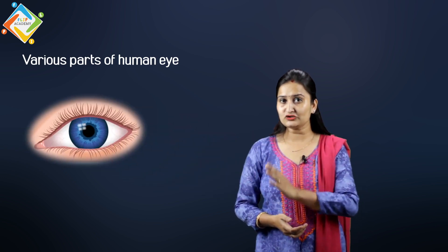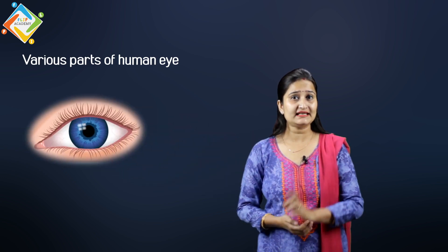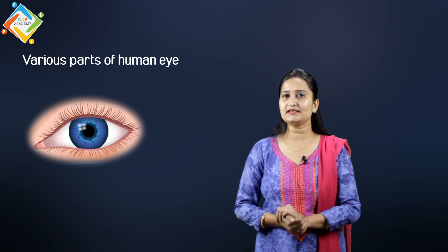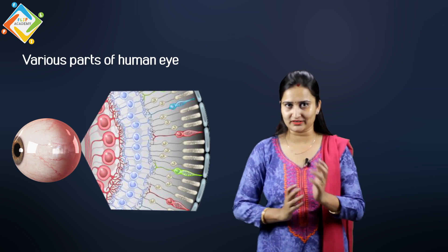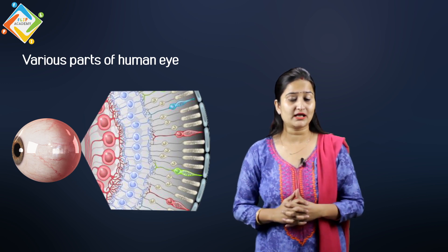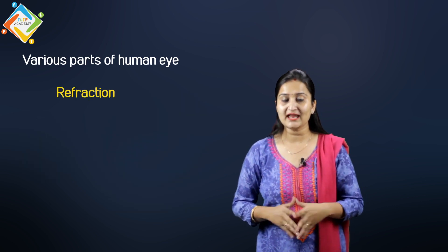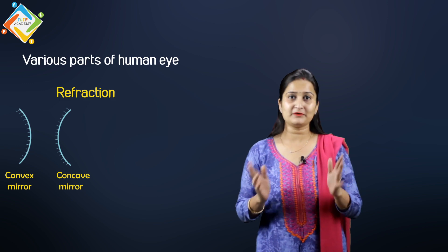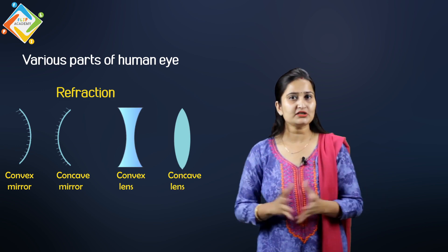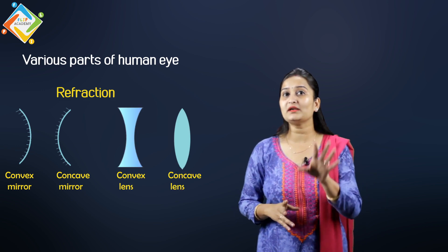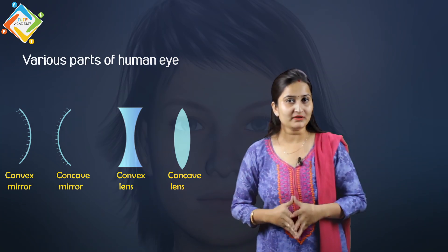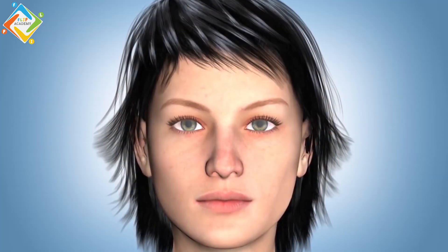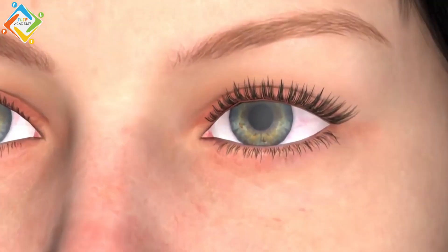This human eye — as simple as it looks — is very complex on the inside. We have studied about reflection by mirrors and by lenses, and all these things are applicable to the human eye. Now we will see how the structure actually works.